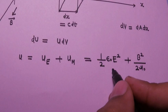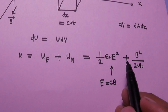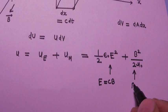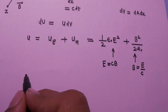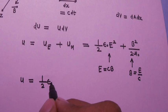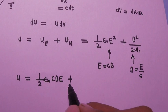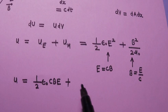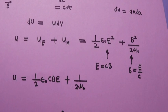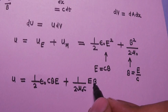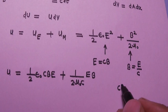Now we apply a small trick: in the first term we replace one E with cB, and in the second term we replace one B with E/c. So the total energy density u becomes ½ε₀(cB·E) plus (1/2μ₀)(E/c·B).